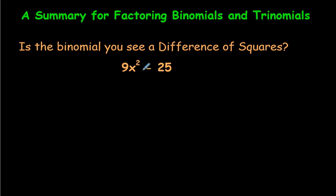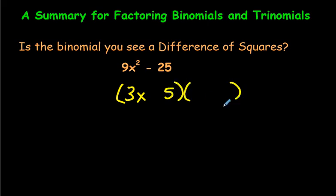You don't have to do much more. You just take the square root of the first term, and take the square root of 25, and write it out twice. These are called a difference of squares, because both terms are perfect squares. You write it out like this, with one bracket using a positive sign and one using a negative sign.